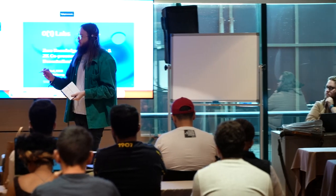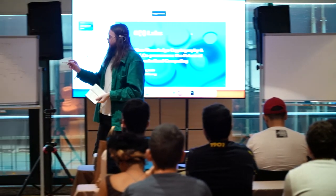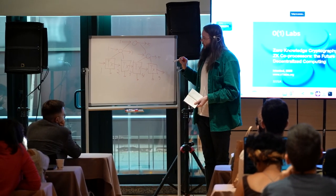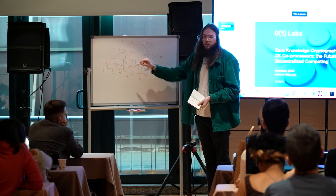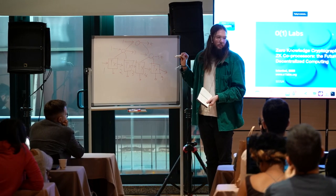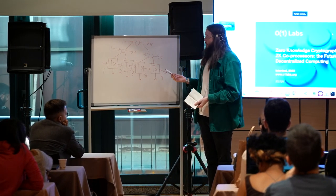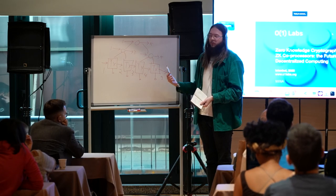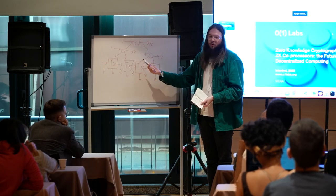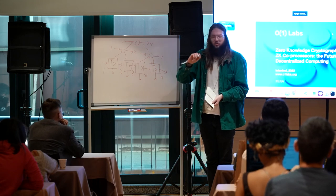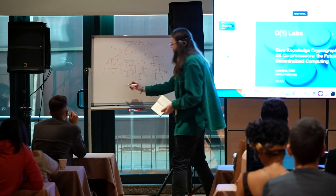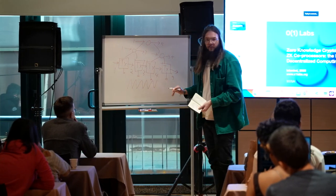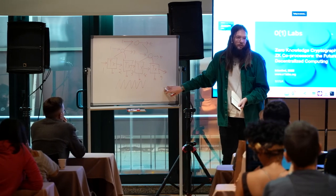If every single block was just building one tree, what you would notice is that initially when it creates this queue of transactions for that block, there would be four pieces of work available. But then once you complete those four pieces of work, there's only two pieces of work, and then only one. So it creates this spiky fluctuation in the amount of work available in the network — but that's not actually what we want.